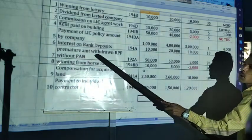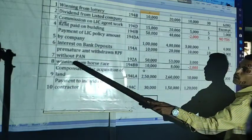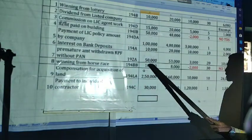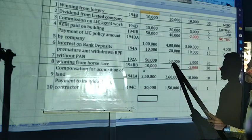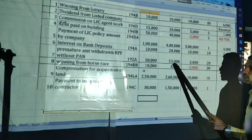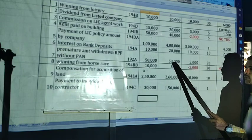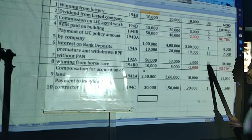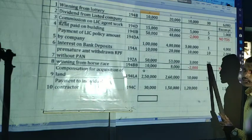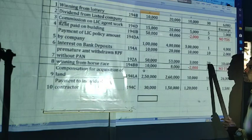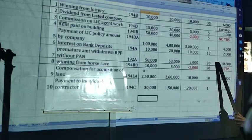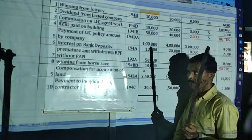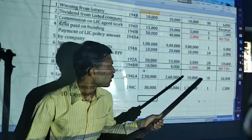Premature amount withdrawn from recognized provident fund without PAN. After 50,000 — no TDS. Here the amount is 53,000. On 53,000, 20% — that is, because it is a special case with no PAN, we have to apply 20%. 53,000 into 20% — that is 10,600 will be the TDS.